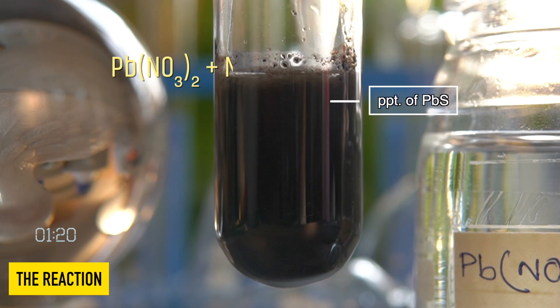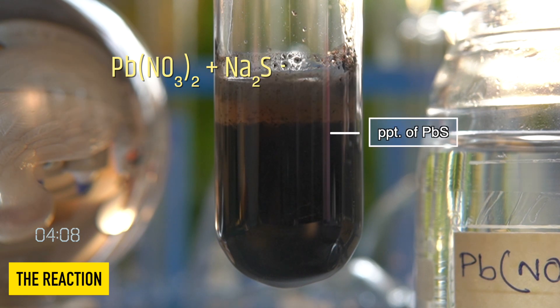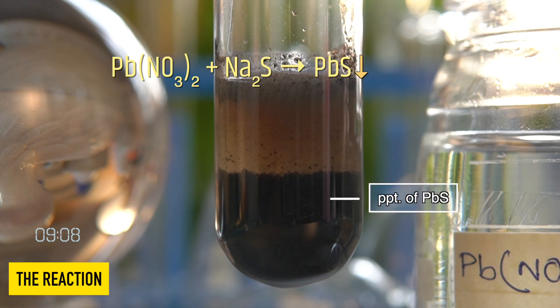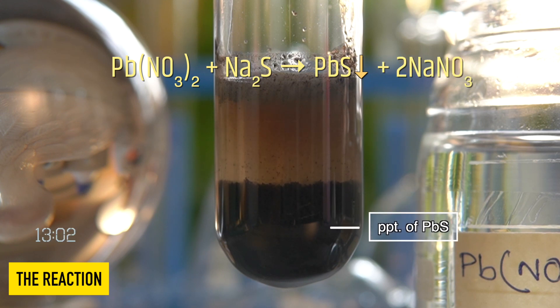lead nitrate reacts with sodium sulphide to produce an insoluble black PPT of lead sulphide along with sodium nitrate.